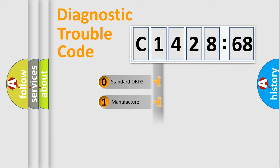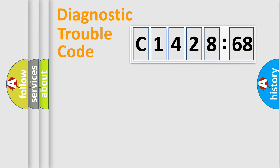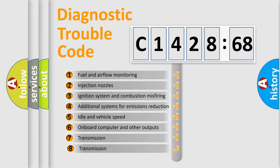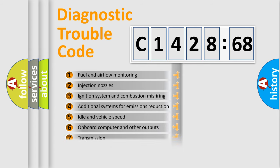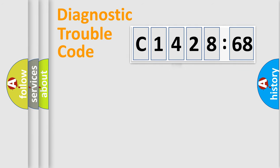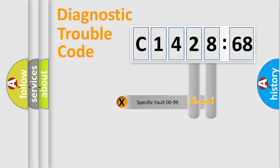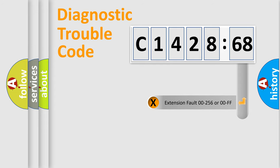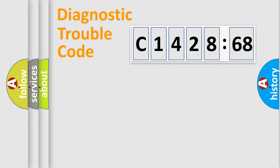If the second character is expressed as zero, it is a standardized error. In the case of numbers 1, 2, or 3, it is a manufacturer-specific expression of the error. The third character specifies a subset of errors. The distribution shown is valid only for the standardized DTC code. Only the last two characters define the specific fault of the group. The add-on to the error code serves to specify the status in more detail.